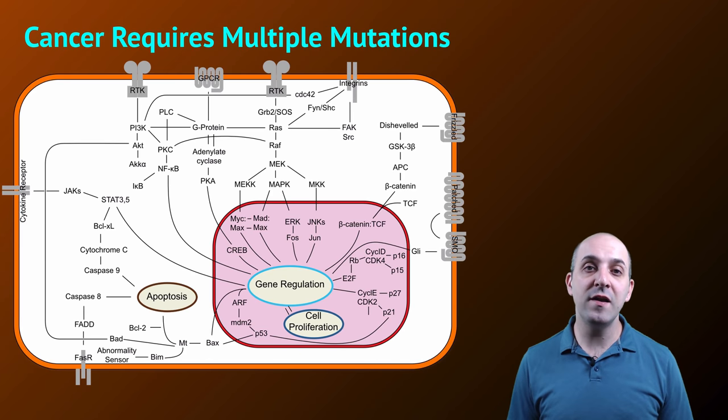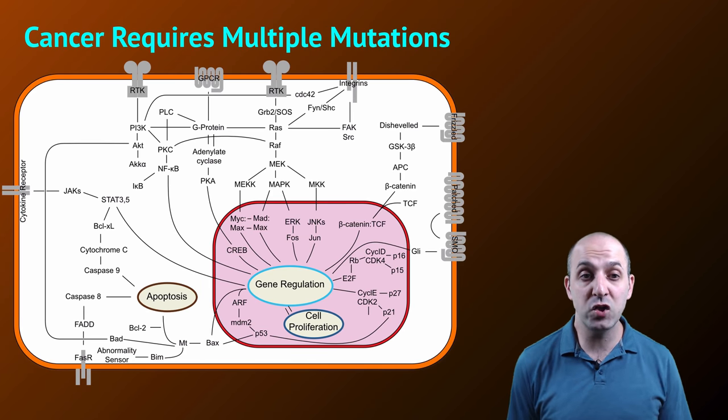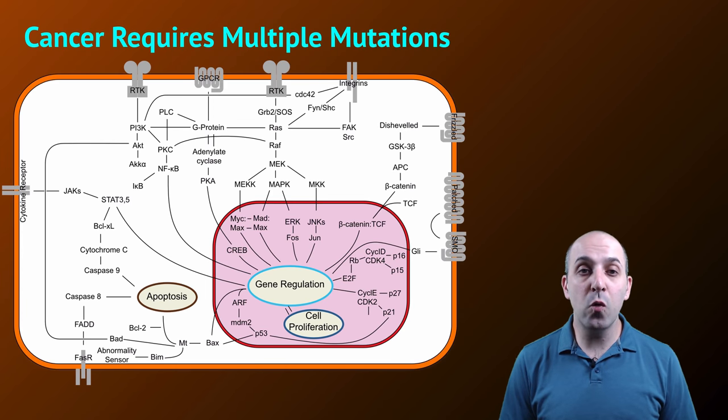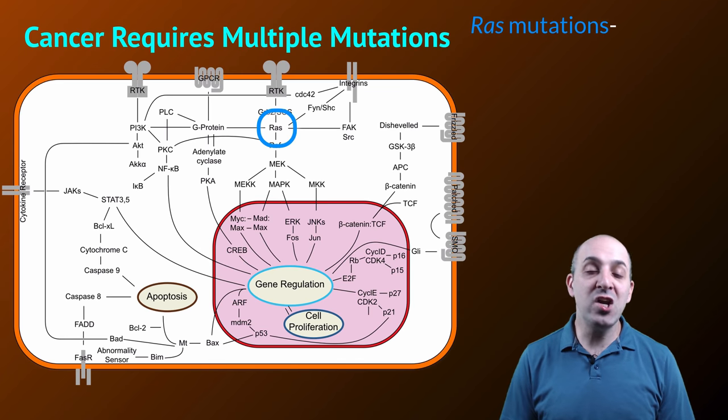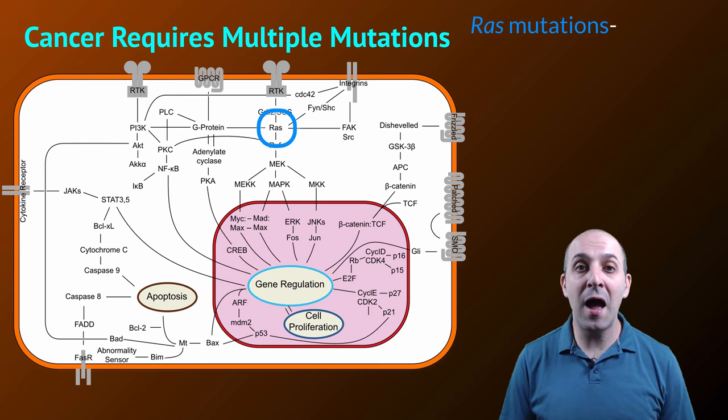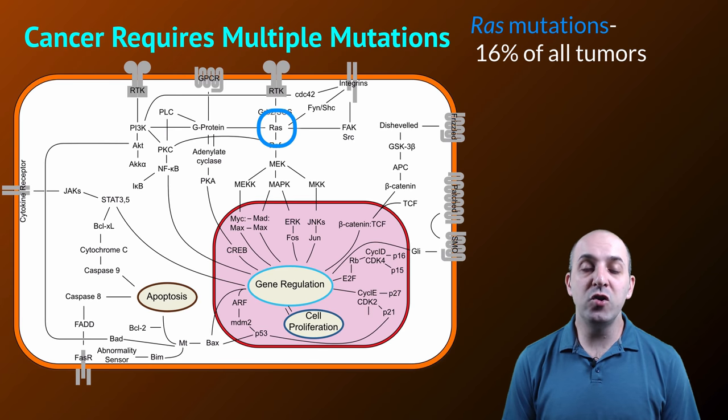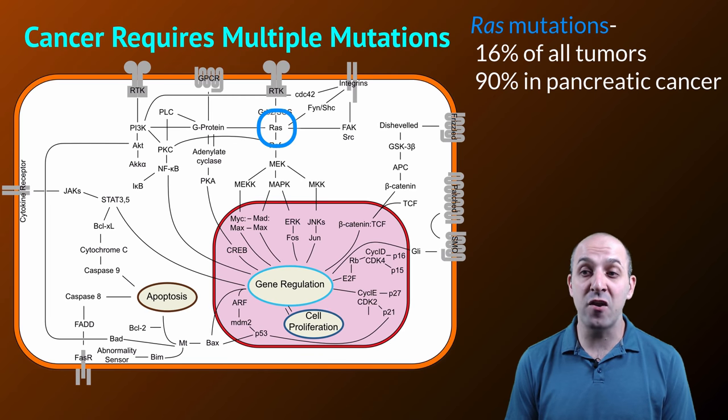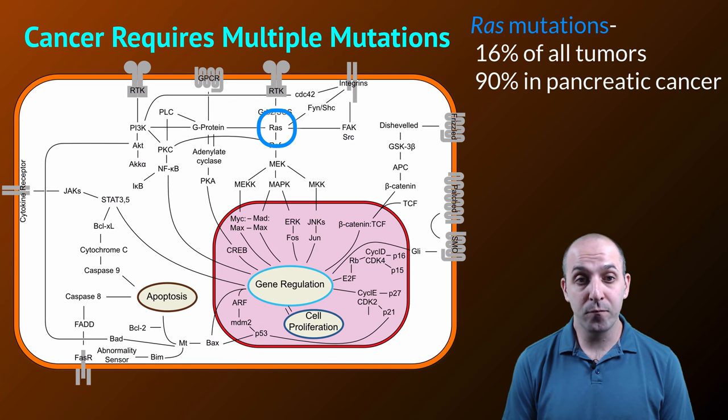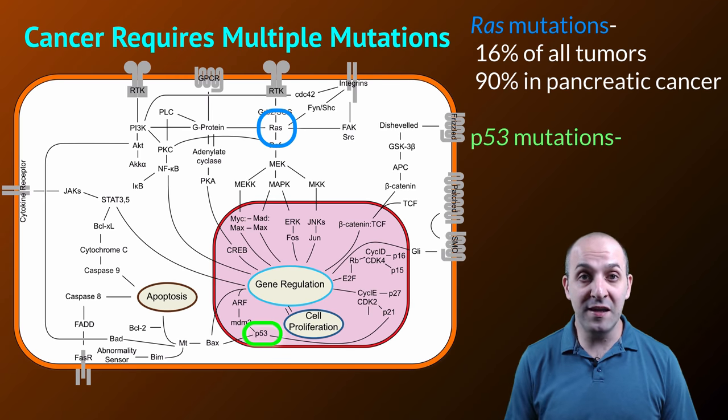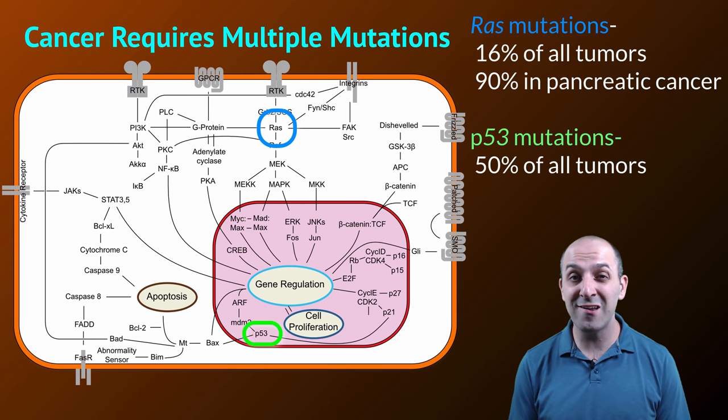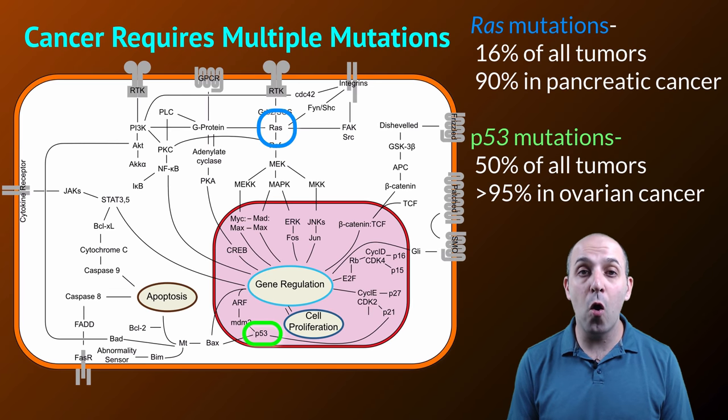Putting all of these things together we can start to get a handle on where cancer comes from and the first thing that we should really understand is that cancer requires multiple mutations in multiple different regulatory proteins in order to occur. For example, mutations in the proto-oncogene RAS that cause it to become hyperactive and send the signal to divide even when the cell shouldn't be dividing are frequently found in cancer cells. They're found in 16% of all human tumors that are analyzed and they're found in up to 90% of pancreatic cancer tumors. Similarly, p53 mutations that cause a decrease in the effect of that tumor suppressor gene are found in something like 50% of all tumors and found in over 95% of all ovarian cancer tumors that are looked at.